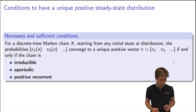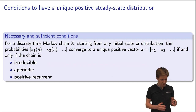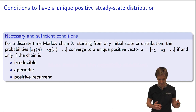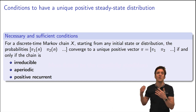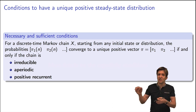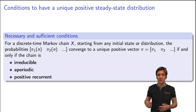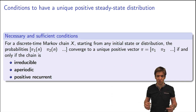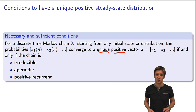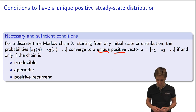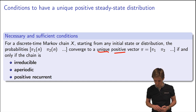First, let us state clearly what we want. We have a discrete-time Markov chain X, and we want that, starting from any initial state or even a probability distribution over those states, the probabilities of being in each state converge over time to a vector of probability pi, that would be unique and positive — meaning it should have only strictly positive values. That will be our steady-state distribution vector.